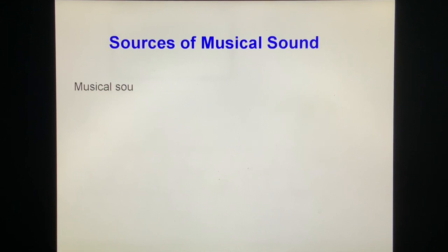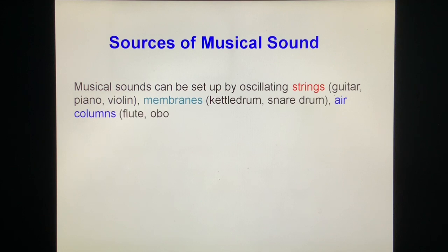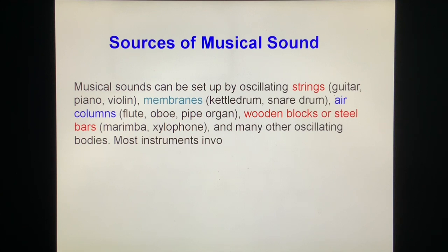Sources of musical sound. Musical sound can be set up by oscillating strings like guitar, piano, violin, membranes like kettledrum, snare drum, air columns like flute, oboe, pipe organ, wooden blocks and steel bars like marimba, xylophone, and many other oscillating bodies.